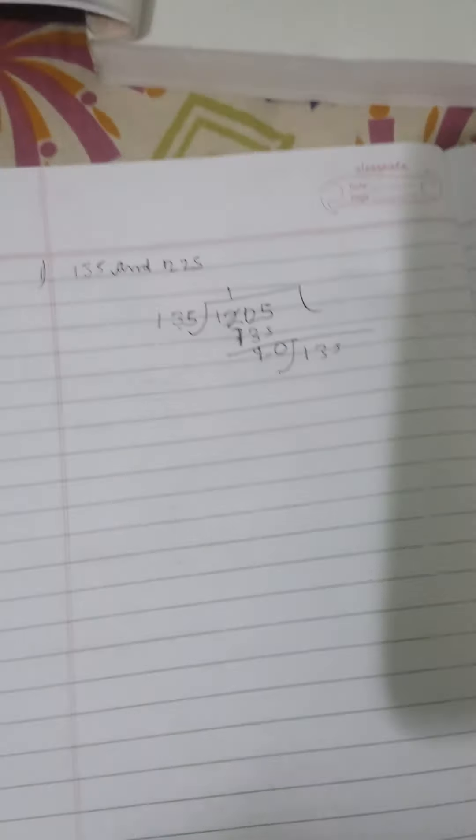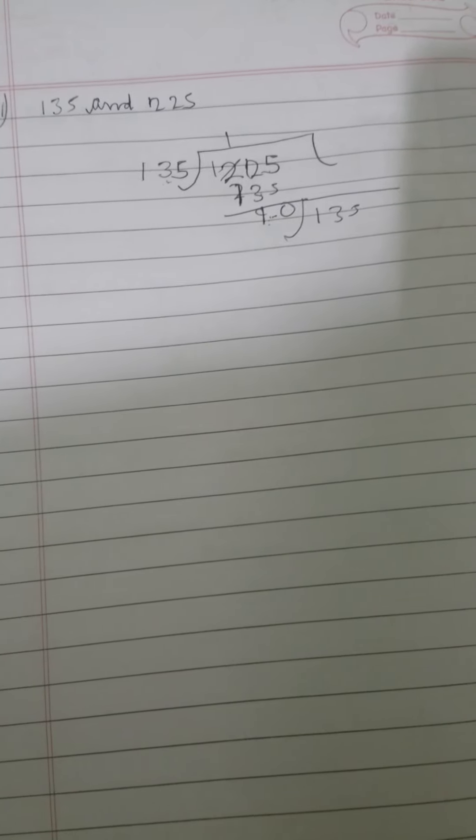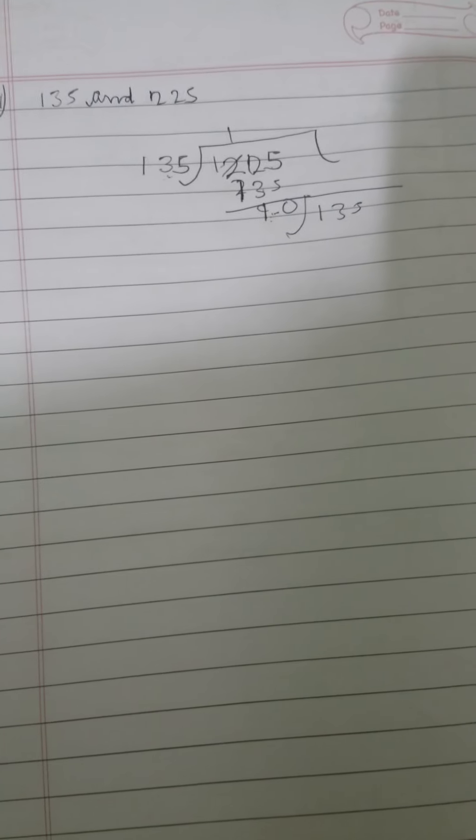Hello everyone, today we'll be starting question number one from exercise 1.1 of class 10th NCERT maths book. Question one is: use Euclid's division algorithm to find the HCF of 135 and 225.